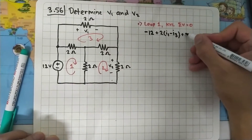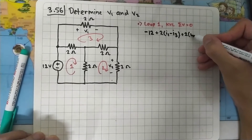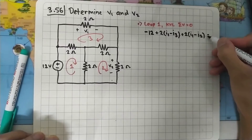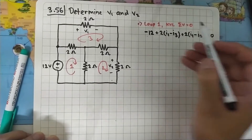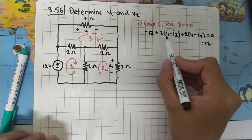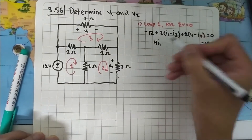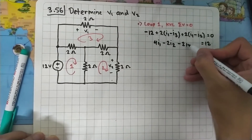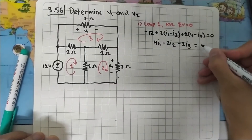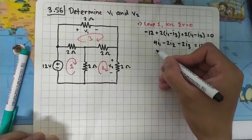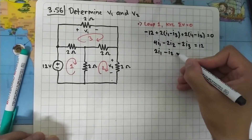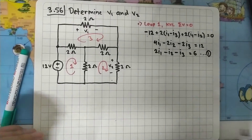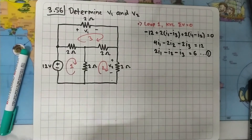Moving to the next 2-ohm resistor, the focus is I1, but I2 is flowing in the opposite direction so we subtract I2. This all equals zero. Moving the -12 to the right side gives 12, and 2+2=4 for I1, giving: 4I1 - 2I2 - 2I3 = 12. Dividing both sides by 2: 2I1 - I2 - I3 = 6. This is Equation 1.